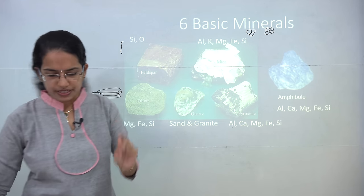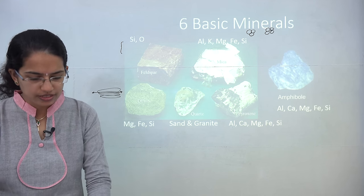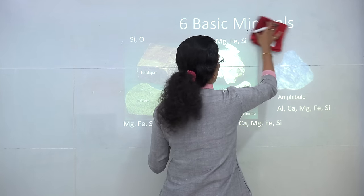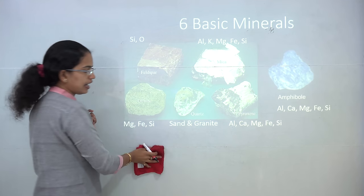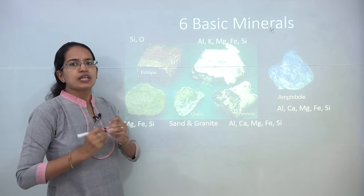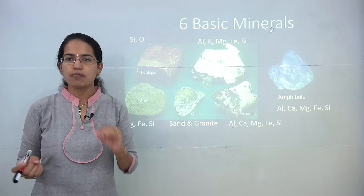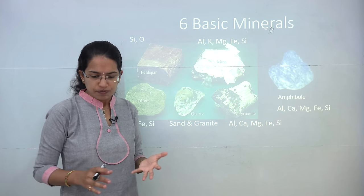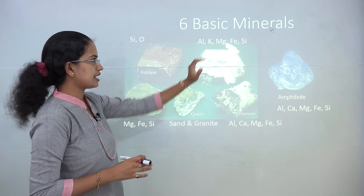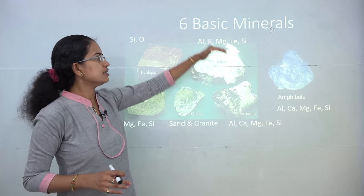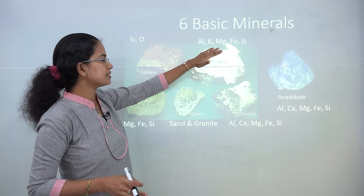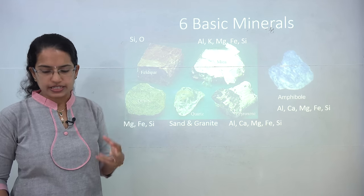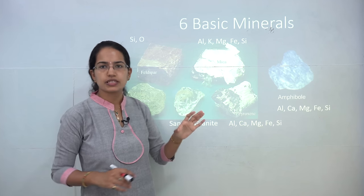Here we have the 6 basic minerals explained. The first is feldspar, primarily made of silica and oxygen along with aluminum, calcium, and magnesium. Nearly half of the Earth is made up of feldspar — it is the most commonly occurring mineral and is usually pink or salmon in color, mainly used in glass making and the ceramic industry. The next is mica, whose main elements are aluminum, potassium, magnesium, iron, and silicon. It is mainly used in electrical wiring and instruments and constitutes nearly 4% of the crust.